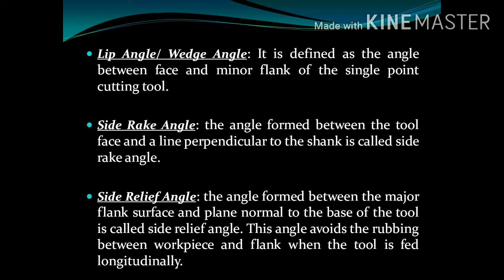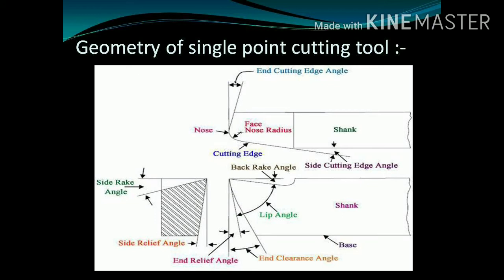The face of tool makes an angle with the minor flank. The next angle is side rake angle. It is the angle between the tool face and a line perpendicular to the shank. When a plane normal to the base makes an angle with the major flank surface, it is known as side relief angle. This angle avoids the rubbing between the workpiece and flank. So, these are all the angles as we discussed.